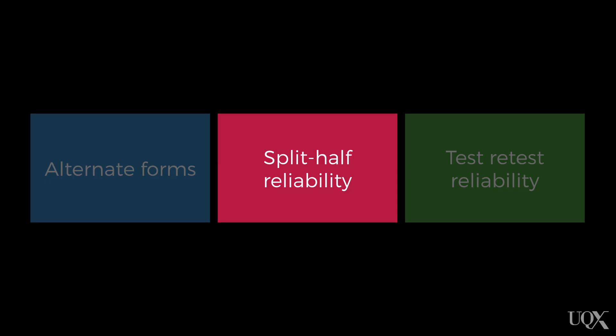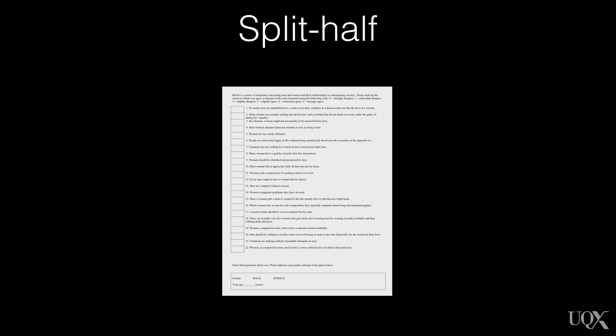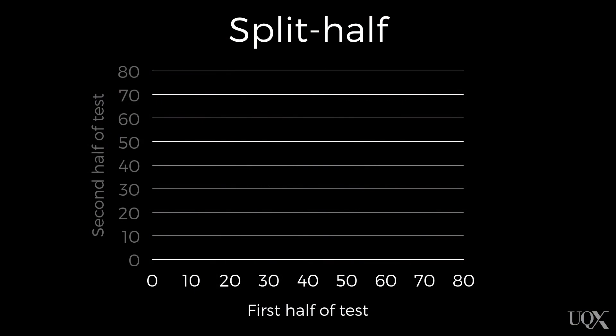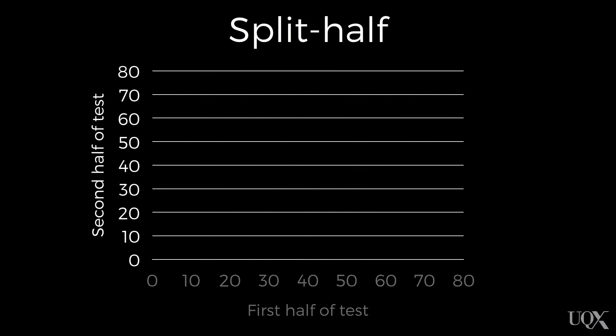Split-half reliability also involves the evaluation of two tests. However, sometimes, maybe due to money or time constraints, it might not be possible for researchers to develop two versions of the test. So when this happens, what we can do is split one test into two tests. From here, we can ask a large number of university students to complete a single test, and then compare their performance on the first half of the test and their performance on the second half of the test.